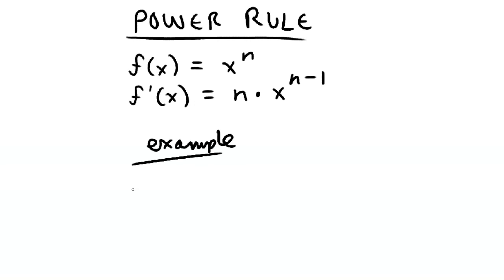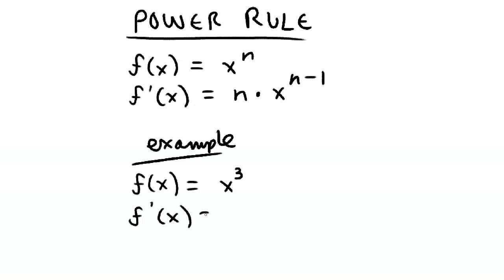For example, if the function of x is x to the power of 3, or x cubed, then the derivative of the function, or f prime of x, is equal to 3 times x to the power of 3 minus 1. This simplifies to 3x squared.